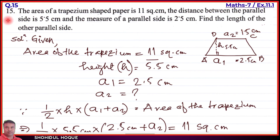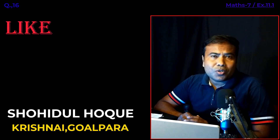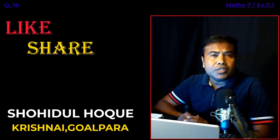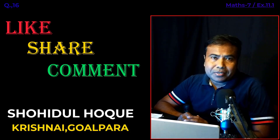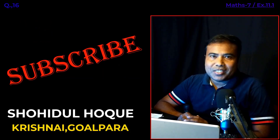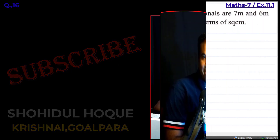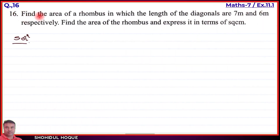Now we solve question number 16: Find the area of a rhombus in which the length of the diagonals are 7 meters and 6 meters respectively. Find the area of the rhombus and express it in terms of square centimeters.